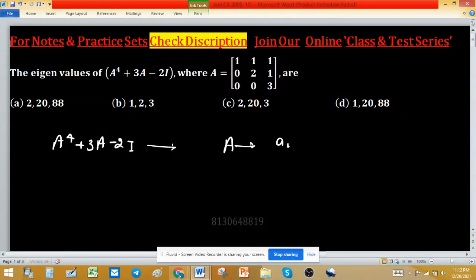If eigenvalues of A are a, b, and c, then eigenvalues of A raise to the power k will be a raise to the power k, b raise to the power k, and c raise to the power k.